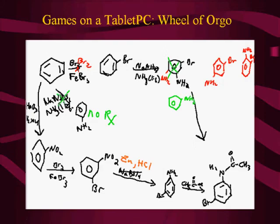Using tablet PCs, I created a game I call Wheel of Orgo, where you put in a starting material like benzene and a final product. Students take turns coming up with reaction steps toward the product, connecting two trees of reactions. Students get points for correct reagents, and three points for completing the synthesis. The difficulty is that many students are shy about coming up to the tablet PC — that's the main minus.